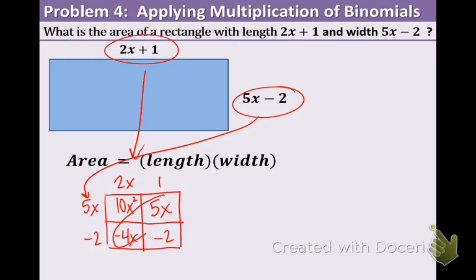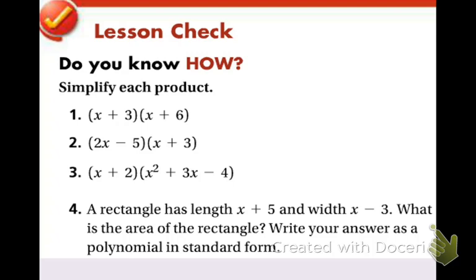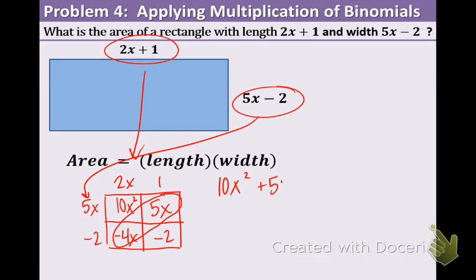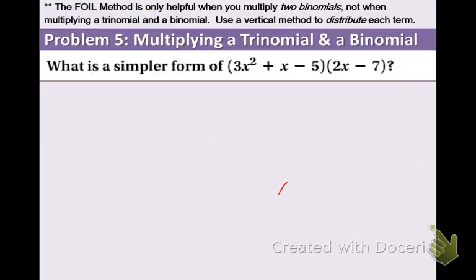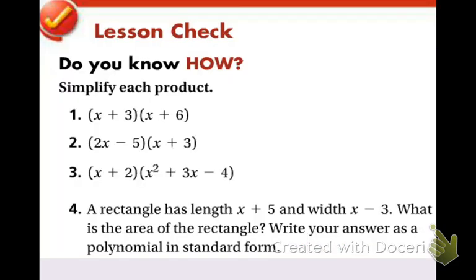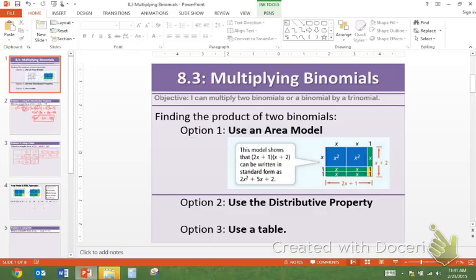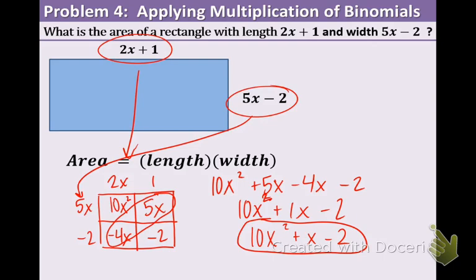In the table method, these values should always be like terms if you're following the correct procedure. So now let's write this again without the table. And then let's combine like terms. When we combine the 5x and the negative 4x, we get positive 1x. And you can put the 1 there if you want. Or not. So 10x squared plus x minus 2 is the area of this rectangle. And of course, if we were given a value for x, we would take that number and plug it in and just do our operations.